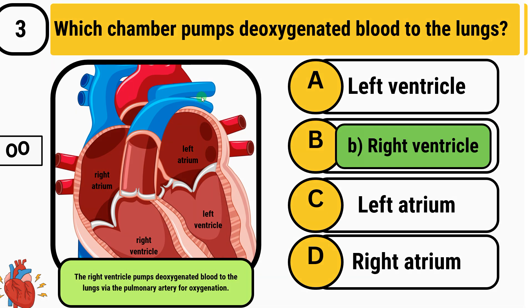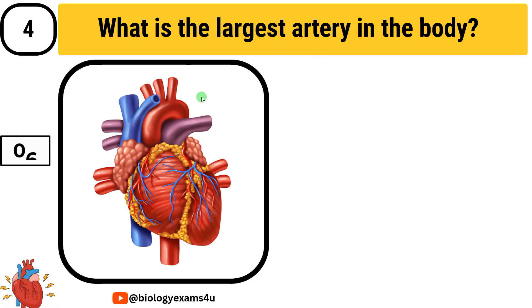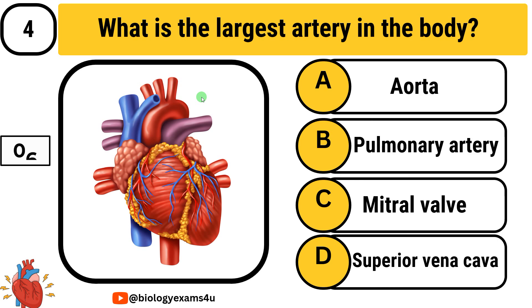Question number 4: What is the largest artery in the body? Option A: aorta. Option B: pulmonary artery. Option C: mitral valve. Option D: superior vena cava.